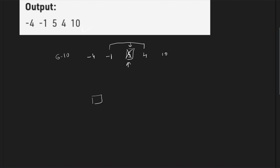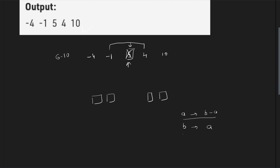Whenever you form pairs — first with last, second with second-last — if the first element is 'a' and the paired element is 'b', you replace 'a' with (b minus a) and replace 'b' with 'a'. The middle element stays unchanged. The key challenge is not performing these operations but keeping track of which nodes are paired together.